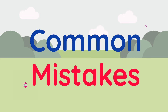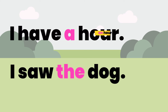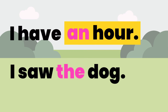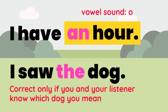Before we wrap up, let's look at some common mistakes. Let's take a look at these two sentences: I have an hour. I saw the dog. I have an hour — is that correct? No, it should be I have an hour, because remember, even though the word begins with H, it has the vowel sound a. I saw the dog is correct only if you and your listener know which dog you mean.